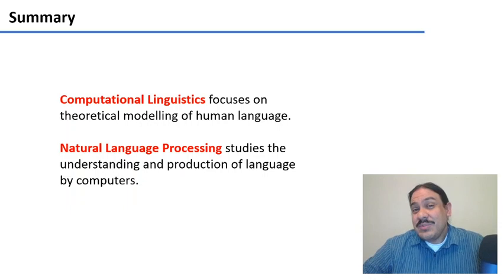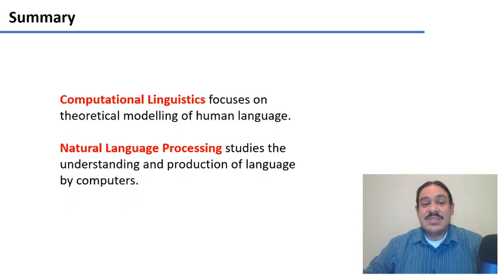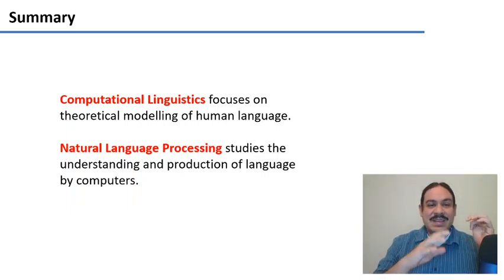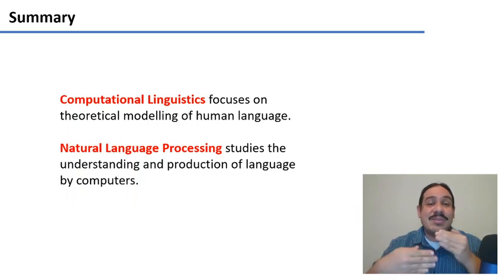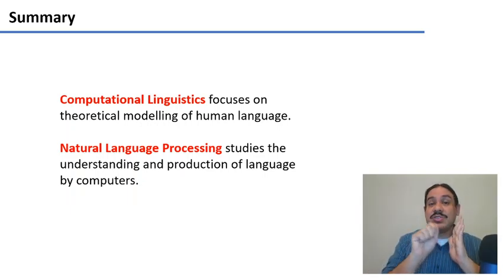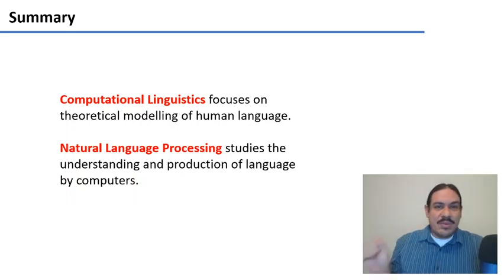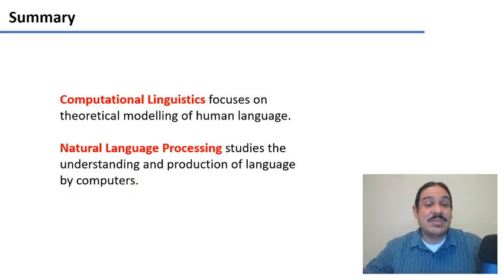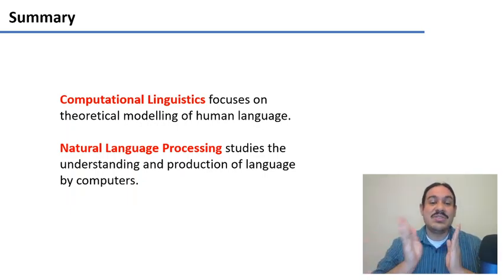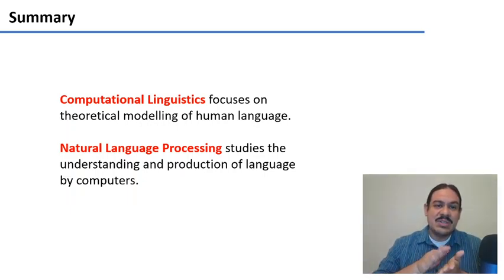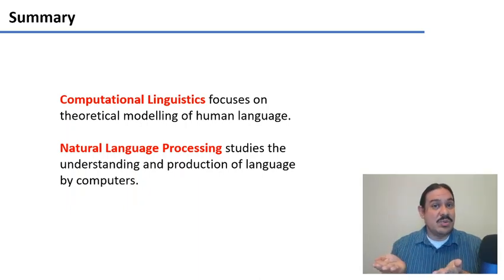So computational linguistics is basically two things. First, computational linguistics proper is the study of the theoretical models that can explain human language. For example, the mathematical structures that we need to account for the complexity that we see in sentences, in phonological rules, and so forth. There's a second subfield called natural language processing, which studies how to understand human language and how to produce it or generate it.